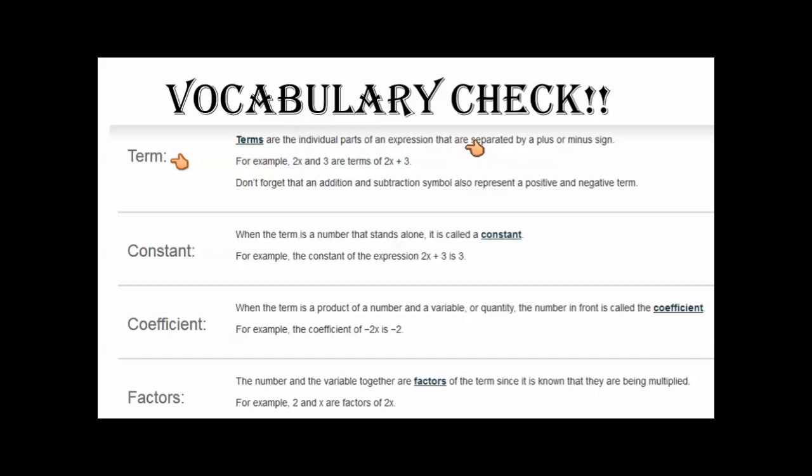A term is the individual part of an expression and our terms are always separated by a plus or a minus sign. We have constants. The constant is the term that is a number that stands alone, meaning there's no variable attached to it. In this case, it's three.